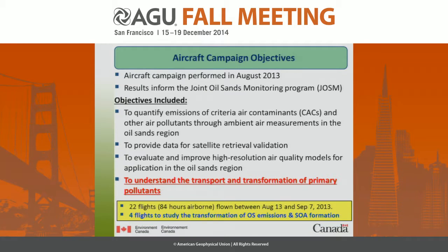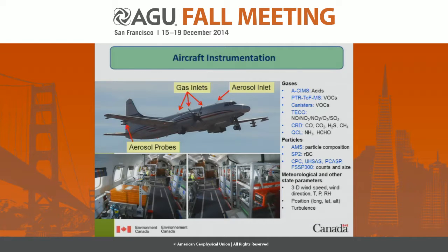With this in mind, there were 22 flights, about 84 hours of vomit-inducing flight, and four flights in particular were used to study the transformation of oil sands emissions and the SOA formation. This is a Convair 580, instrumented with a number of different gas and particle phase instruments: a PTR-TOF-MS for VOCs, high resolution AMS for particle composition, SP2 for black carbon, acid sims, and the standard 3D winds, lat, long, and so on.